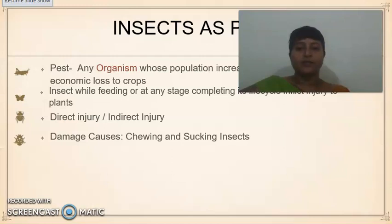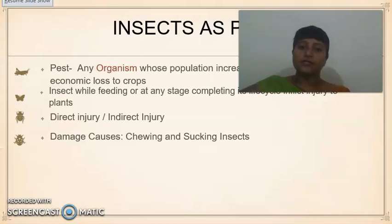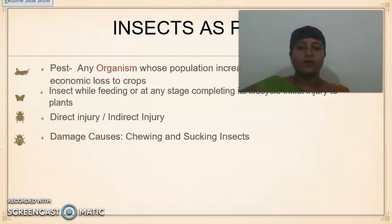All insects feed upon plant parts in one way or another, and their feeding habits vary. Some insects are very good at chewing plant parts, and some are very good at sucking plant sap. Based on this, the types of injury caused on plants are broadly classified into two types: direct injury and indirect injury.